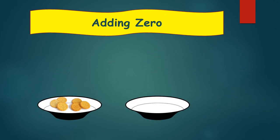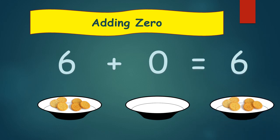Let's see. How many biscuits are in the first plate? Good — 6. There are 0 biscuits in the second plate. How many biscuits in all? We can say 6 plus 0 equals 6. There are 6 biscuits in all. Here we added the number 6 with 0 and got the same number, 6.